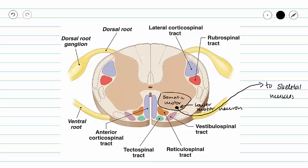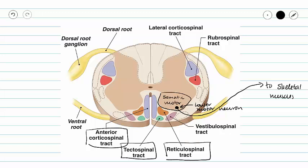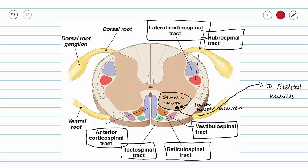Also in this picture, we can see different areas where we have our descending pathways. We are going to talk about corticospinal tracts, which we see here, tectospinal tracts, which we see here, reticulospinal tracts, which we see here, and our vestibulospinal tract. Let's start with our corticospinal tracts — we have two of them: a lateral corticospinal tract and an anterior corticospinal tract.